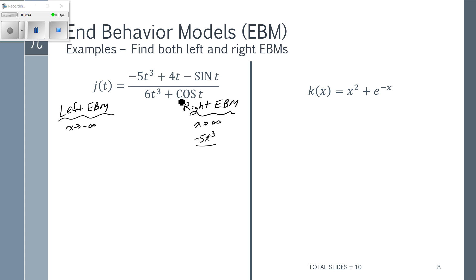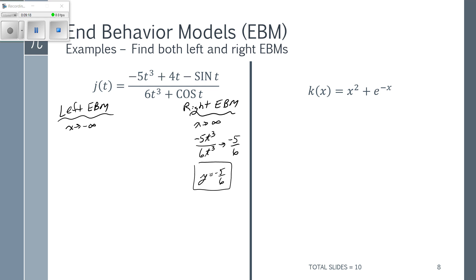On the bottom, similar reasoning applies — the polynomial grows faster than cosine because cosine is always between -1 and 1, so 6t³ takes over on the bottom. Simplifying, I get -5/6. This means that as X approaches positive infinity, my function j(t) behaves like y = -5/6. That's my right end behavior model. Going to the left with negative infinity doesn't change the fact that sine and cosine are bounded between -1 and 1, and it doesn't affect how I handle polynomials, so I end up with the exact same end behavior model going both directions. This is common, but we always have to check.